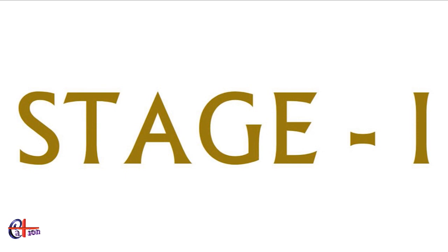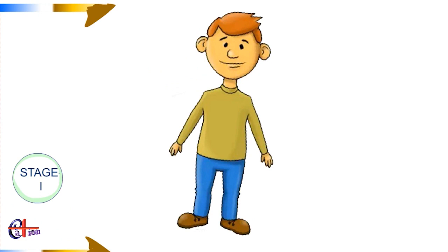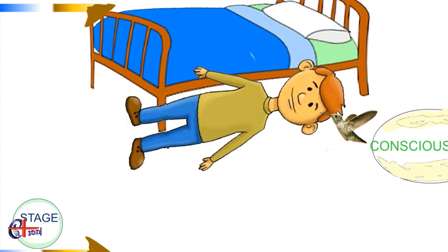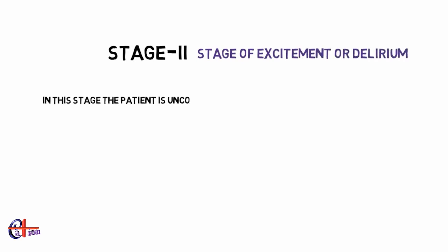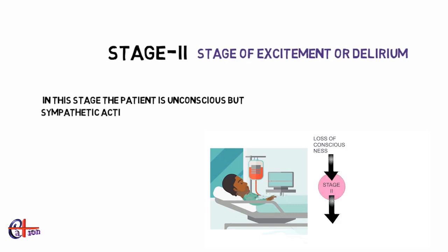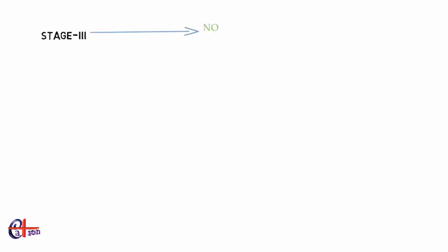Stage one, also known as the stage of analgesia, is the period between the introduction of an anesthetic agent into the body and the loss of consciousness — the patient is conscious but drowsy. Stage two, also known as the stage of excitement, is where the patient is unconscious but sympathetic activity such as heart rate and blood pressure increases, followed by dilation of pupils, and there is also a chance of vomiting.